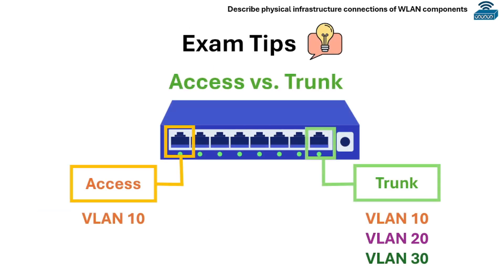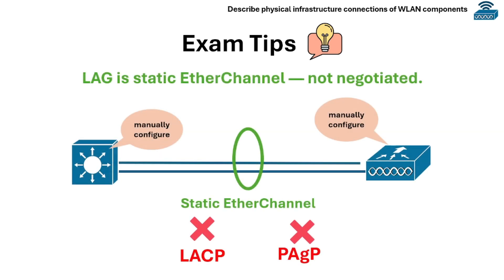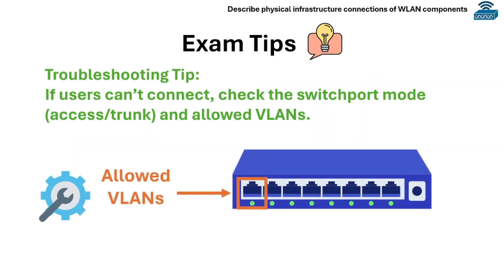For exam tips, always remember that single VLAN is for access port and multiple VLANs is for trunk port. When using WLC, LAG is static EtherChannel and not negotiated. And for a troubleshooting tip: if users can't connect, check the switch port mode — whether it's access or trunk — and check the allowed VLANs.